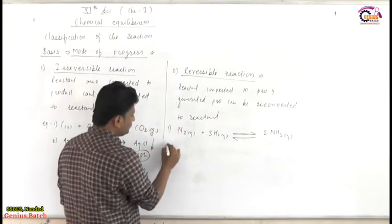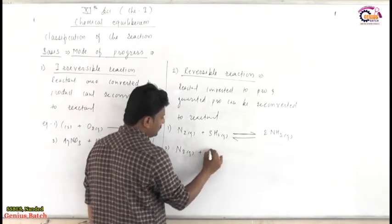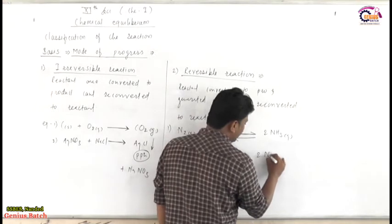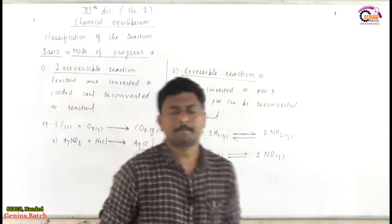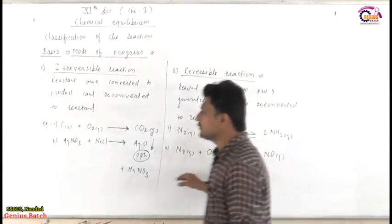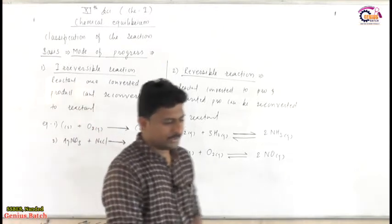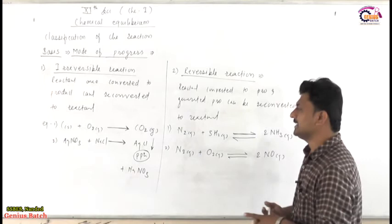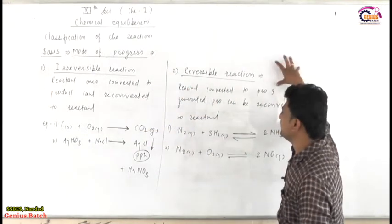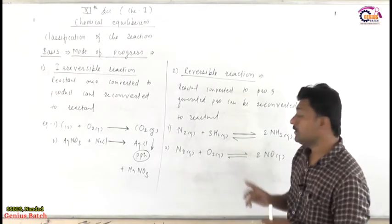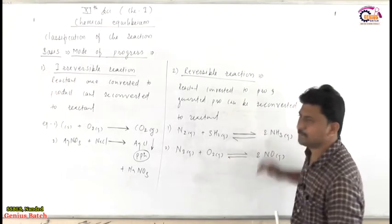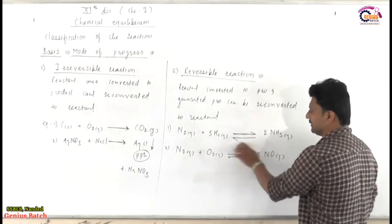Another example: N2 gaseous plus O2 gaseous is reversibly converted to 2NO gaseous. This is also a reversible chemical reaction. The mode of representation is different for reversible and irreversible reactions — irreversible is represented by a single-headed arrow pointing from left to right, whereas reversible is represented by two half-headed arrows, one pointing from left to right and the other from right to left. The forward arrow represents the forward reaction and the backward arrow represents the backward reaction.